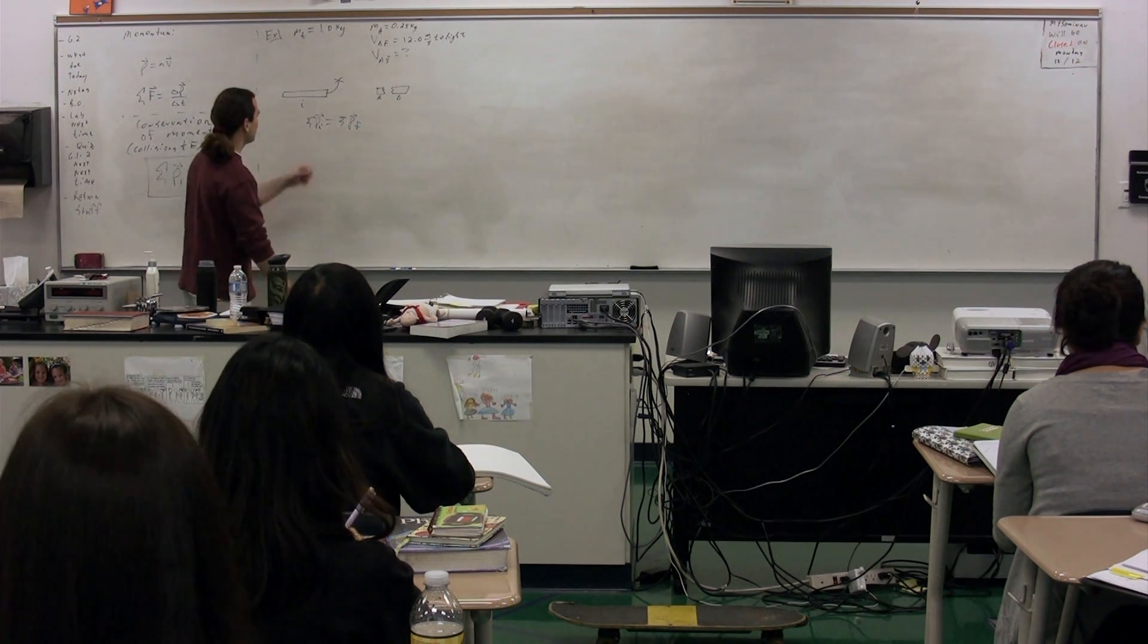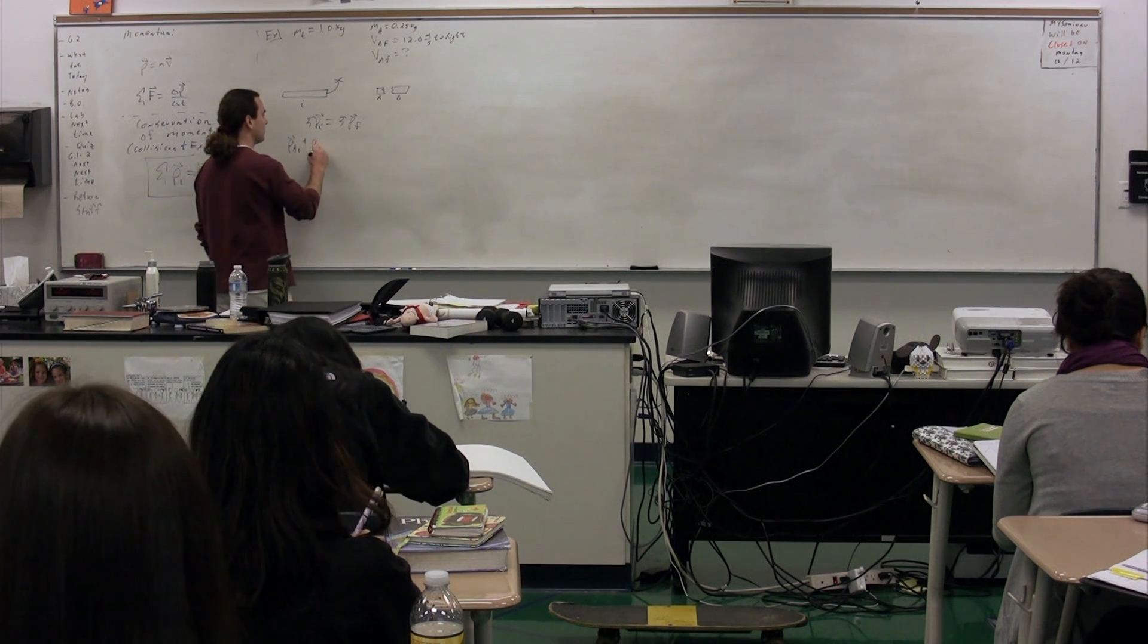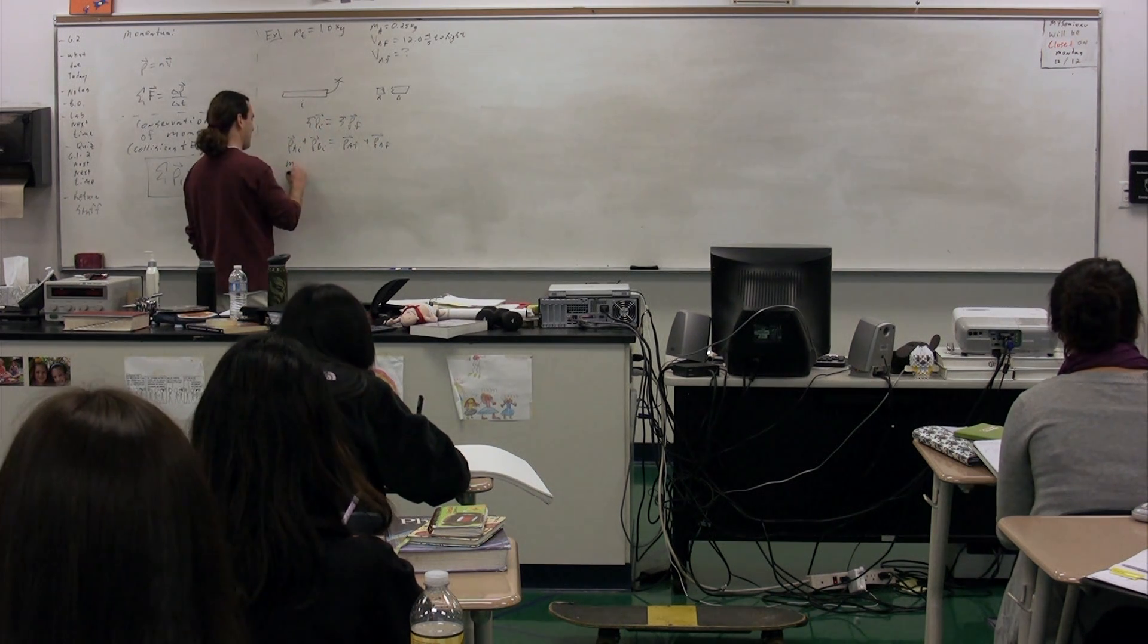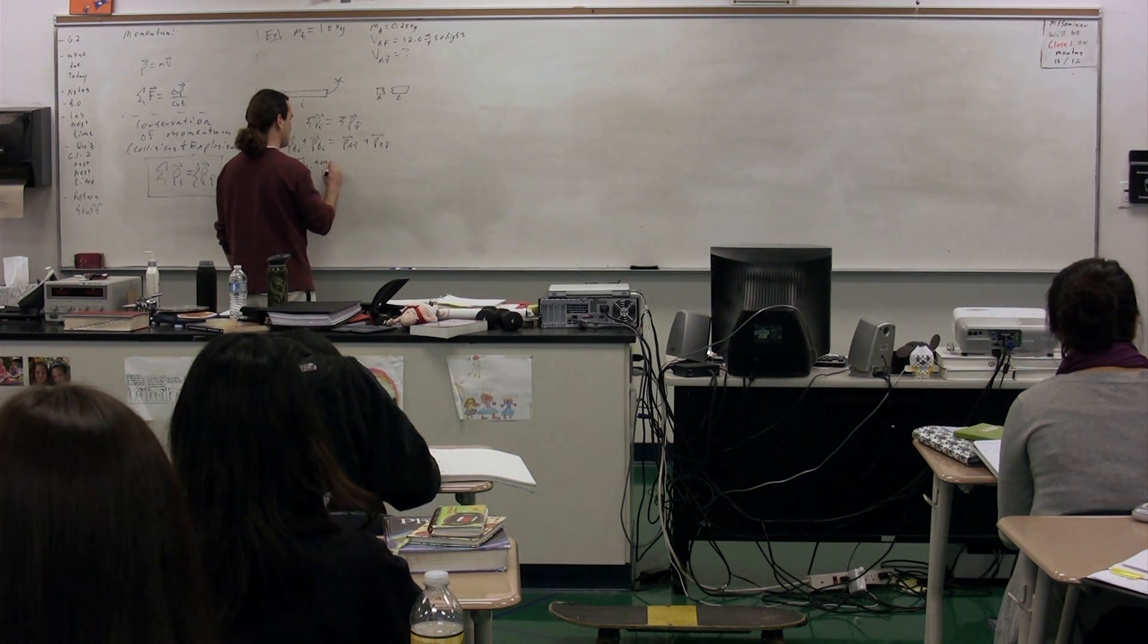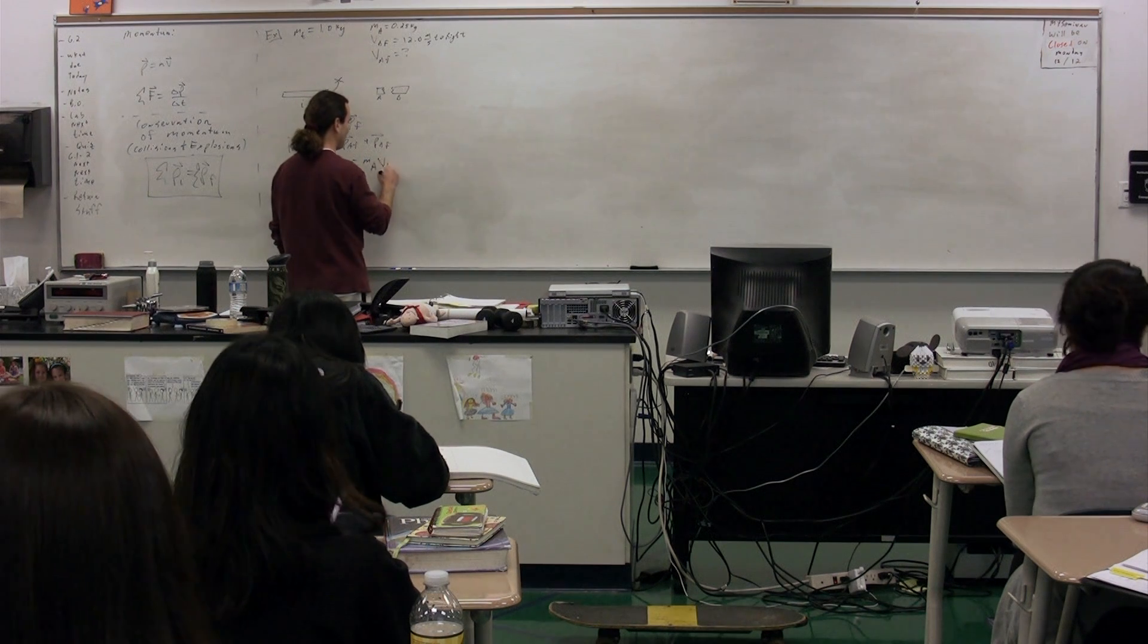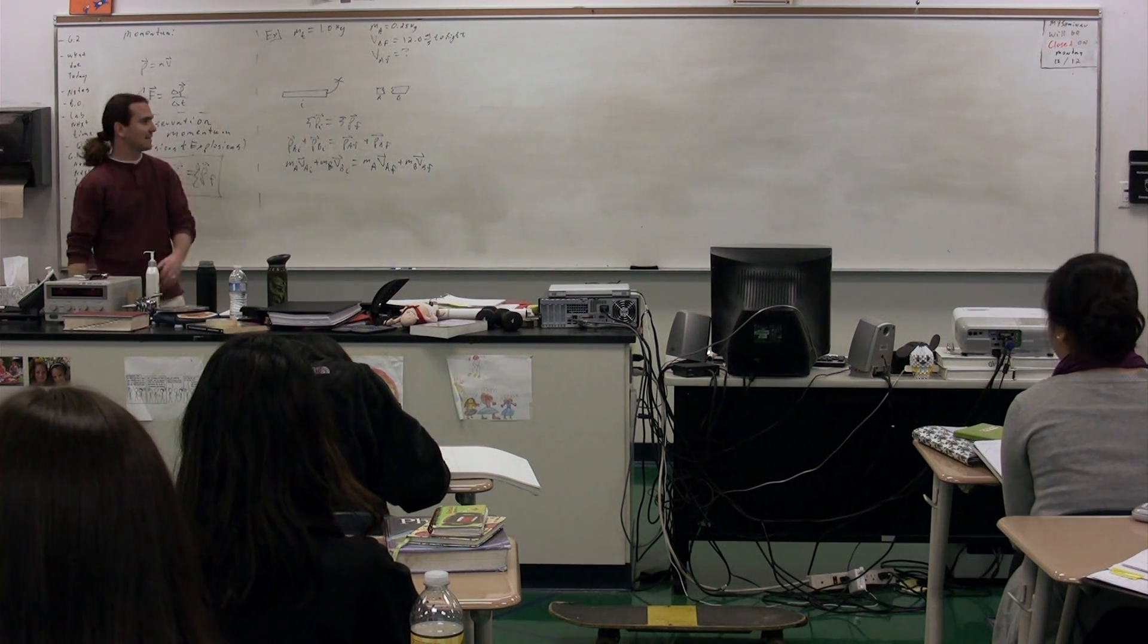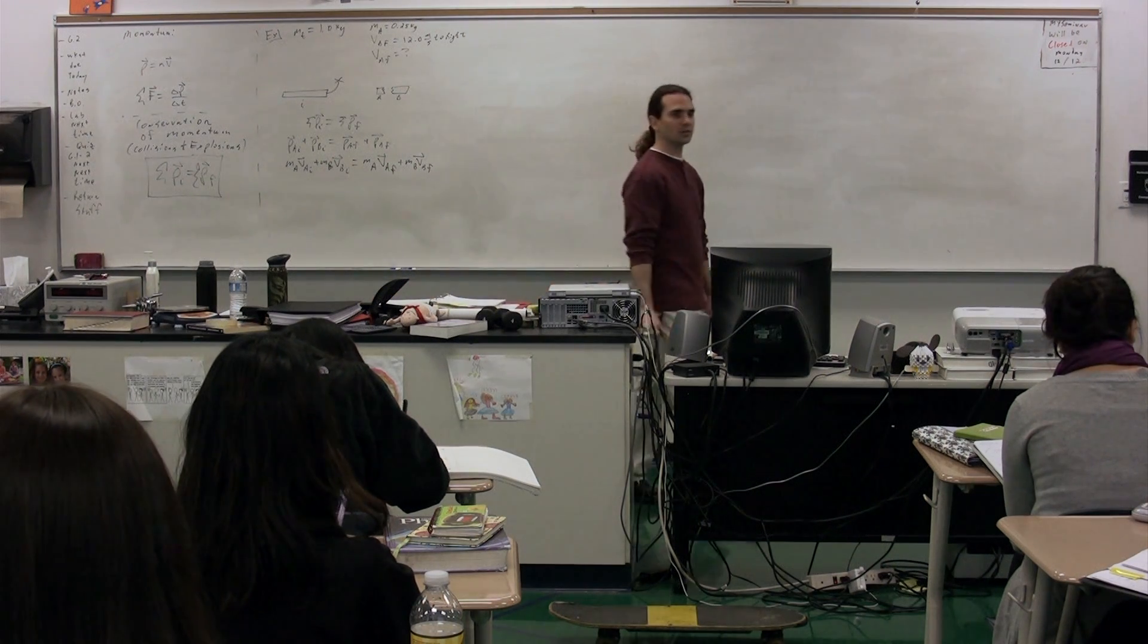We have the initial momentum of the system equal to the final momentum of the system. In other words, the momentum of A initial plus the momentum of B initial equals the momentum of A final plus the momentum of B final. Or, mass of A times velocity of A initial plus mass of B times velocity of B initial equals mass of A times velocity of A final plus mass of B times velocity of B final. That's what the sum of initial momentum equals sum of final momentum works out to in this particular case.